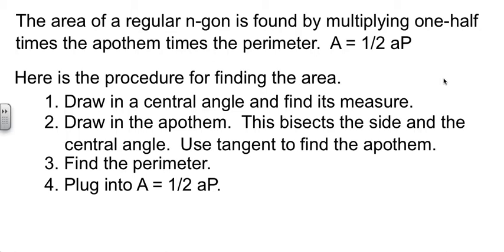Then draw in the apothem. The apothem does two things: it bisects the side, and it bisects the central angle. Our job, then, is to figure out the apothem, and we can do that using tangent. Then we need to figure out the perimeter, just add up all the sides, and then plug into our formula. And I've got that on your note page for you, so you have it to work from.